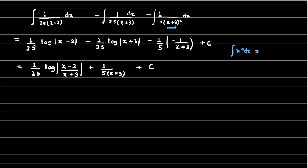One point to note: sometimes the expression will not be given directly in factored form. You may be given an expression like ax² plus bx plus c in the denominator, so you have to factorize the expression first and then use partial fractions to simplify it.